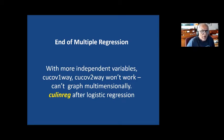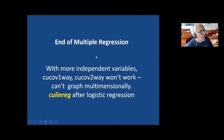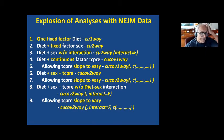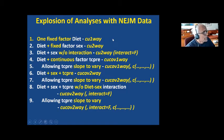You have a continuous outcome variable, and you want to relate it to a bunch of variables — we'll get back to it. But first, before starting with categorical variables, I want to spend some time talking about model selection.